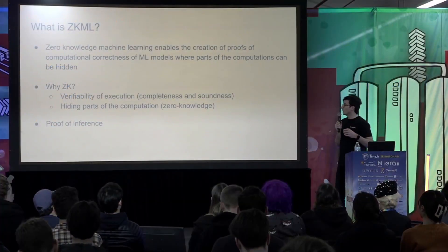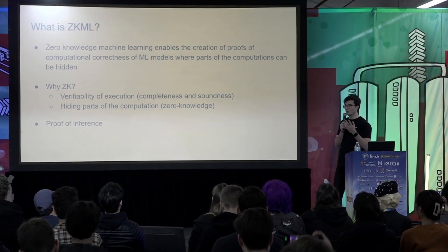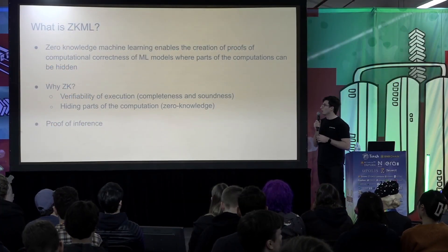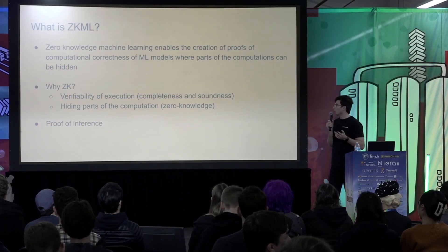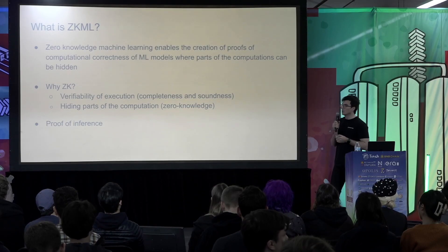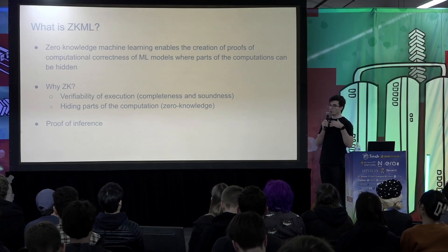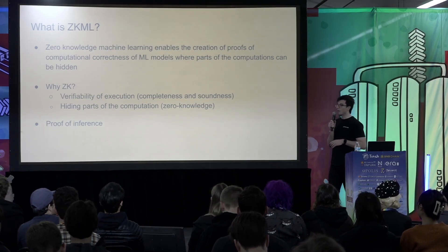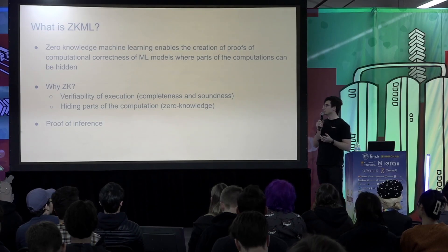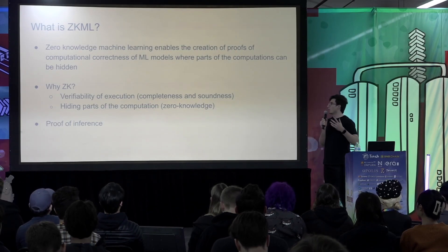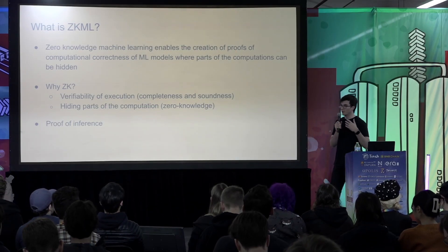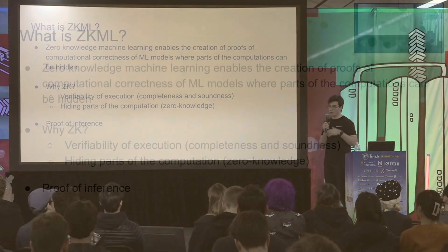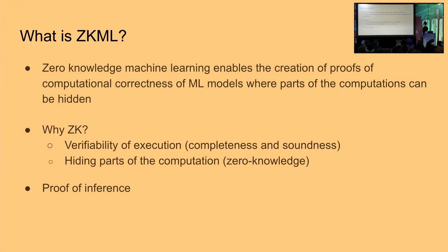Zero-knowledge cryptography essentially gives us two main properties. One is the verifiability of execution, which stems from the cryptographic properties of completeness and soundness. The second part is essentially hiding parts of the computation that you're performing without sacrificing this verifiability.